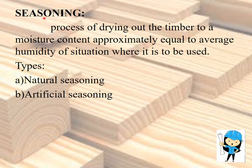Seasoning is the process of drying out timber to a moisture content approximately equal to the average humidity of the situation where it is to be used. Seasoning is required because freshly cut timber contains more than 50% water and sap. If we do not remove the water and sap, the timber will decay. To prevent decay, water and sap are removed by seasoning. There are two types: natural seasoning and artificial seasoning.